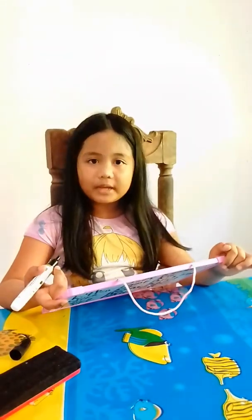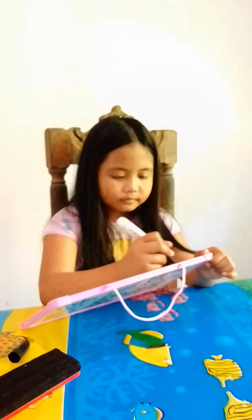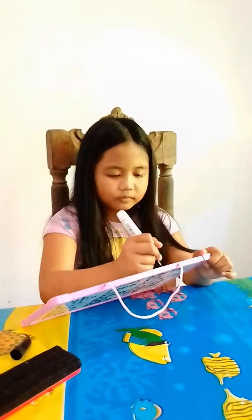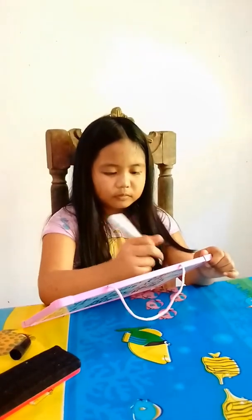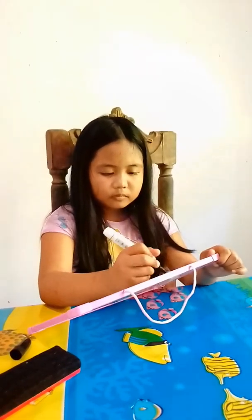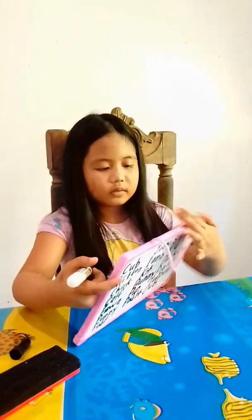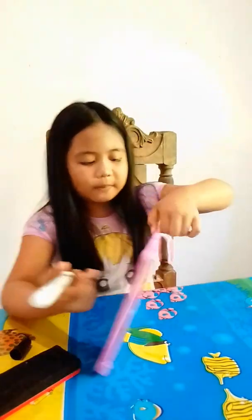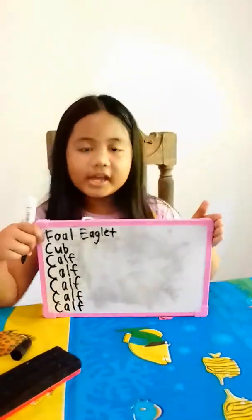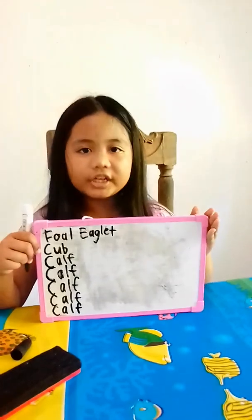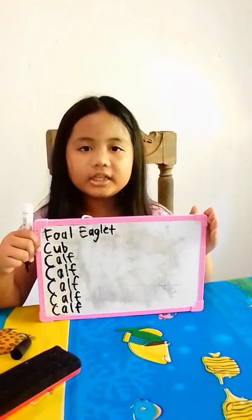What is the baby of an eagle? The baby of an eagle is an eaglet. The spelling is E-A-G-L-E-T.